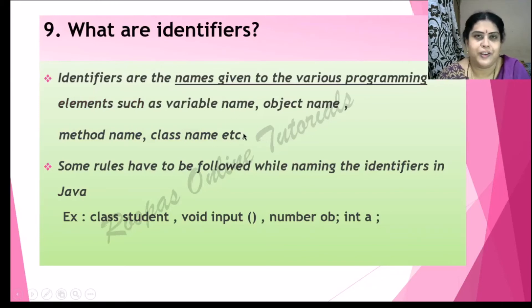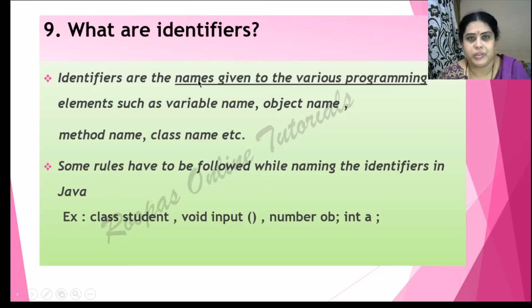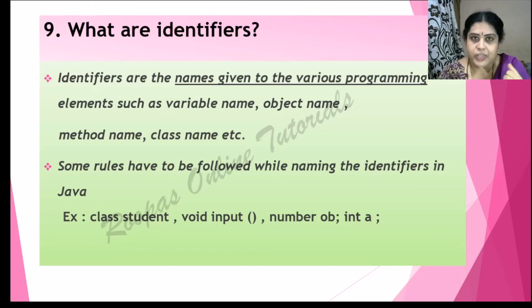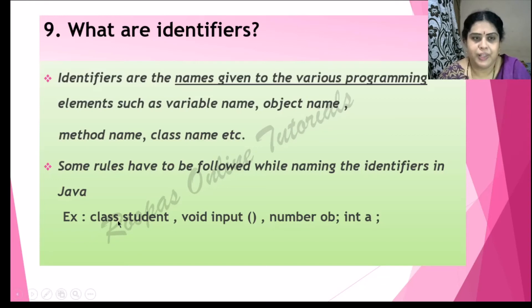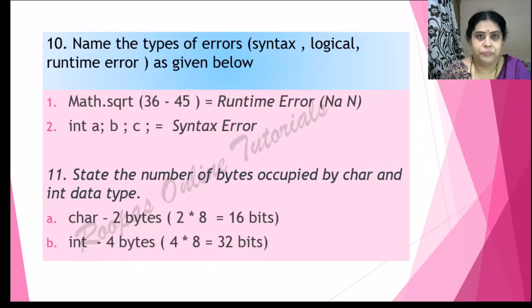What are identifiers? Just as you are identified by your identity card which contains your name, identifiers are the names given to various programming elements such as variable names, object names, method names, class names, etc. Some rules for naming identifiers: it cannot start with a digit, cannot have blank spaces, and should not use keywords. For example, in class Student: 'Student' is an identifier, 'input' is an identifier, 'a' is an identifier, and 'ob' as an object name is also an identifier.